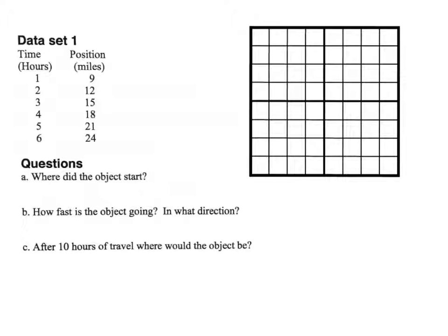Alright everybody, here we go — worksheet 3, unit 1.3. Let's see if we can fly through this. We have a data set here: time and position. Remember, position goes on the y-axis and time goes on the x-axis, in case you've forgotten.